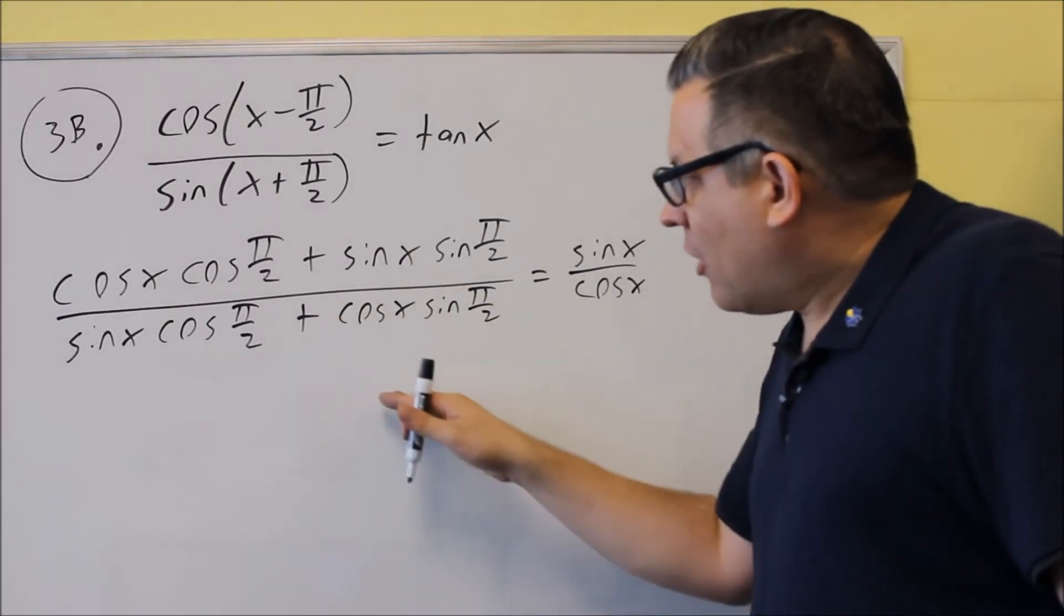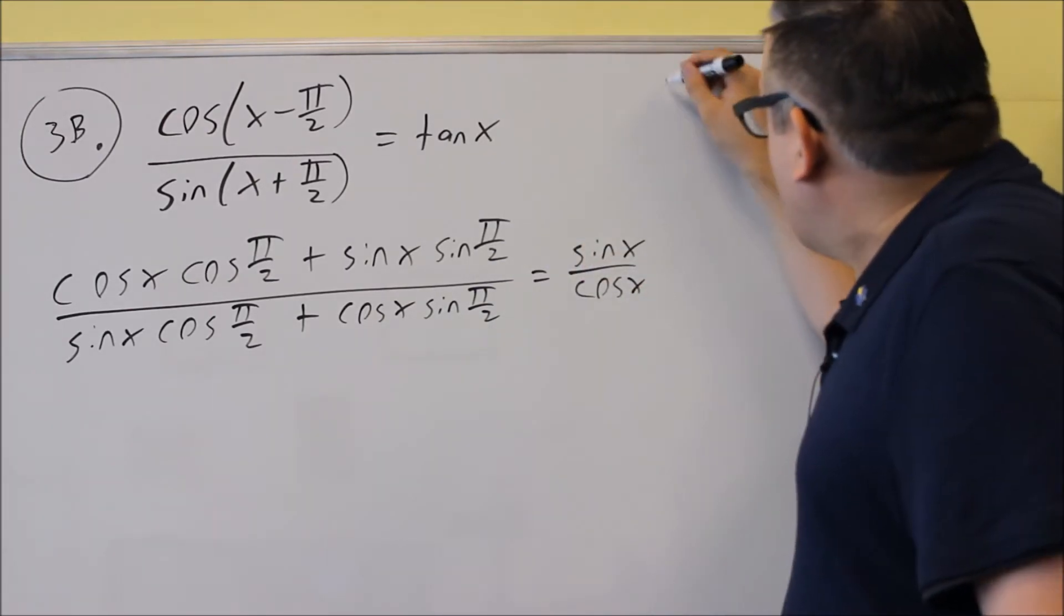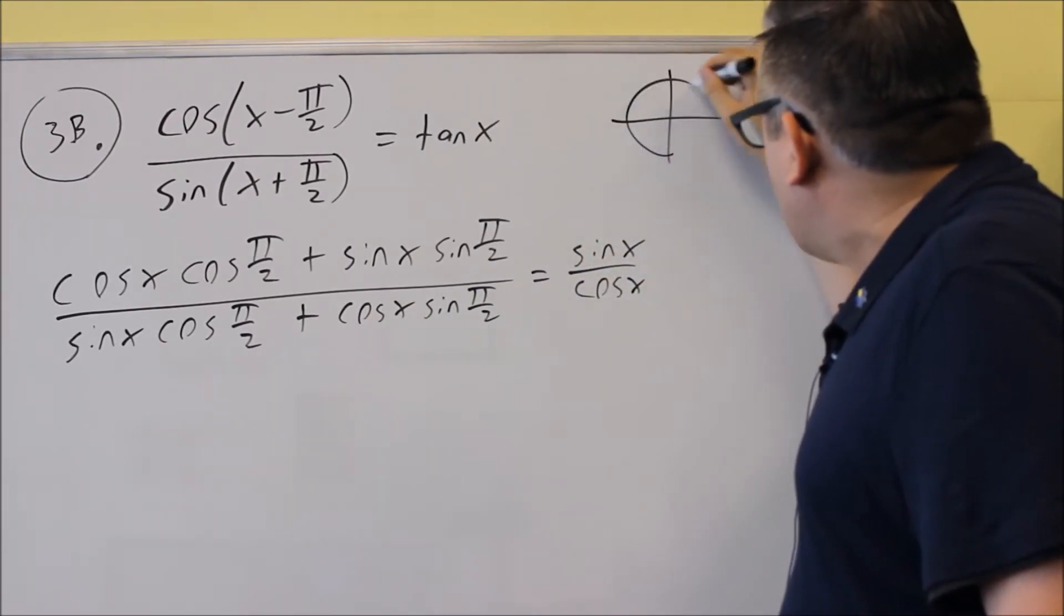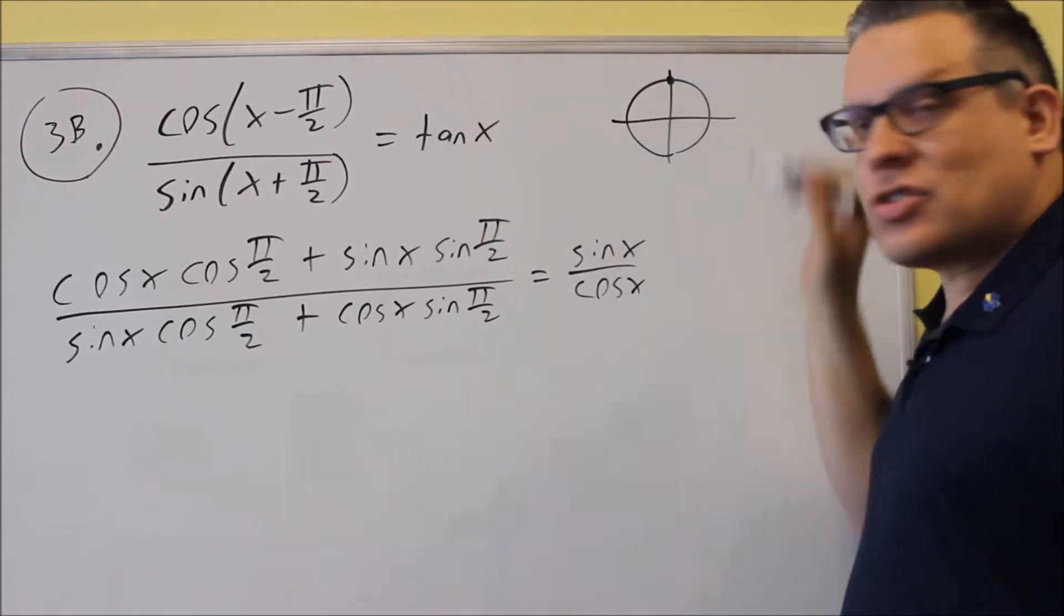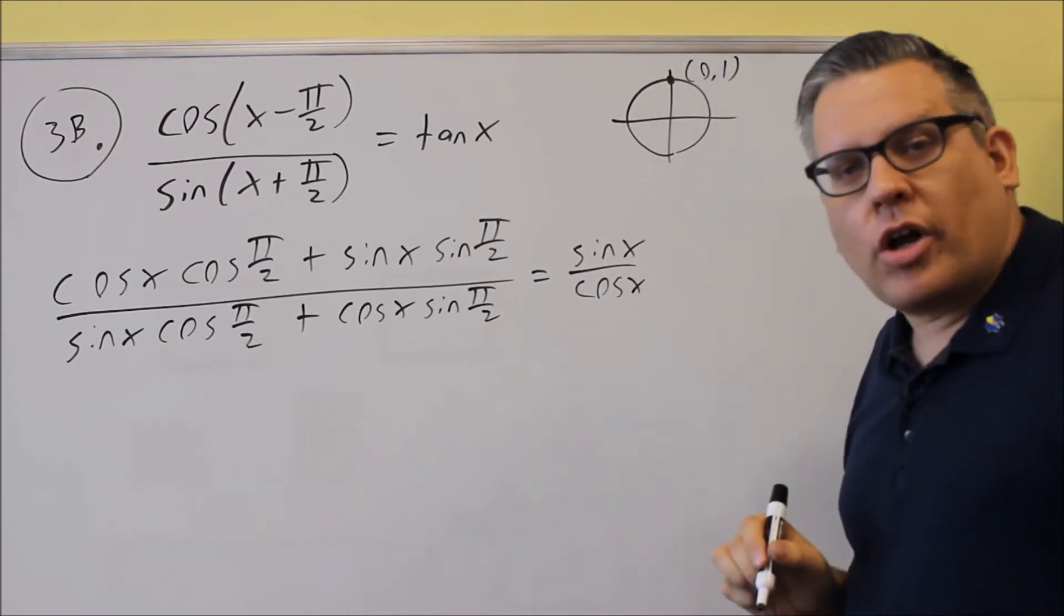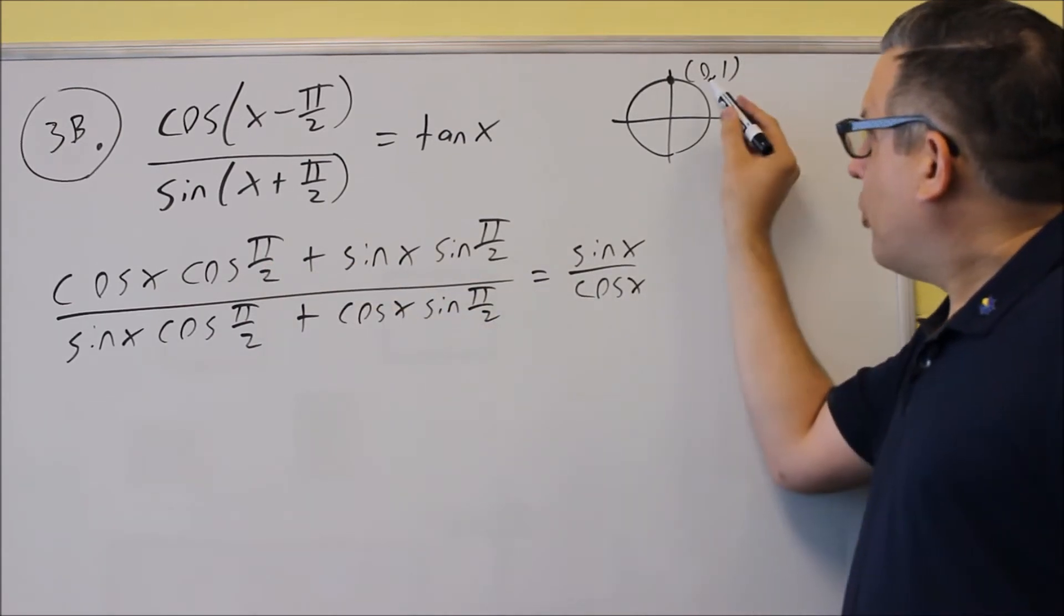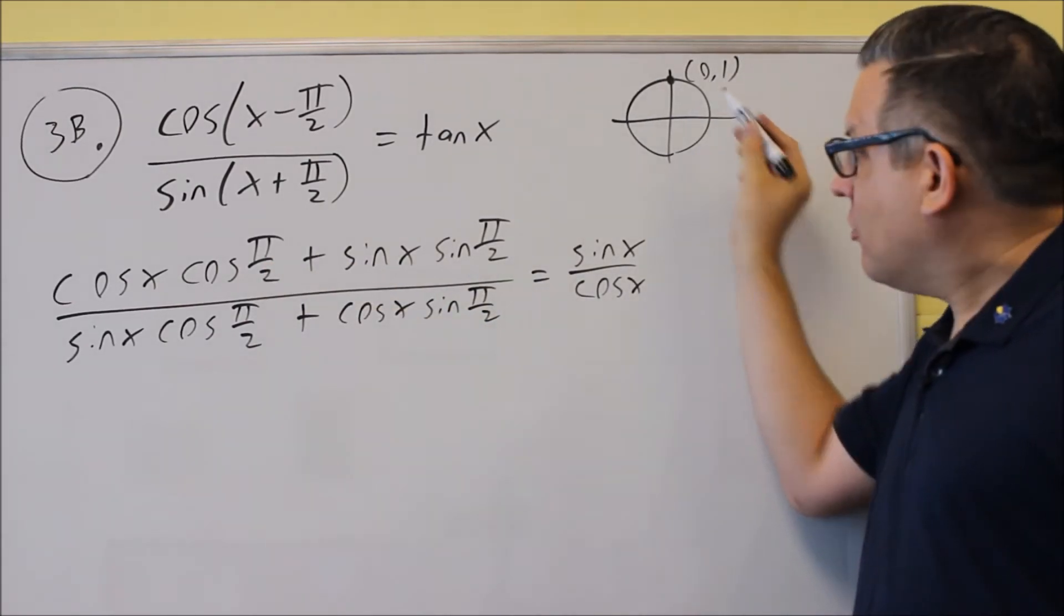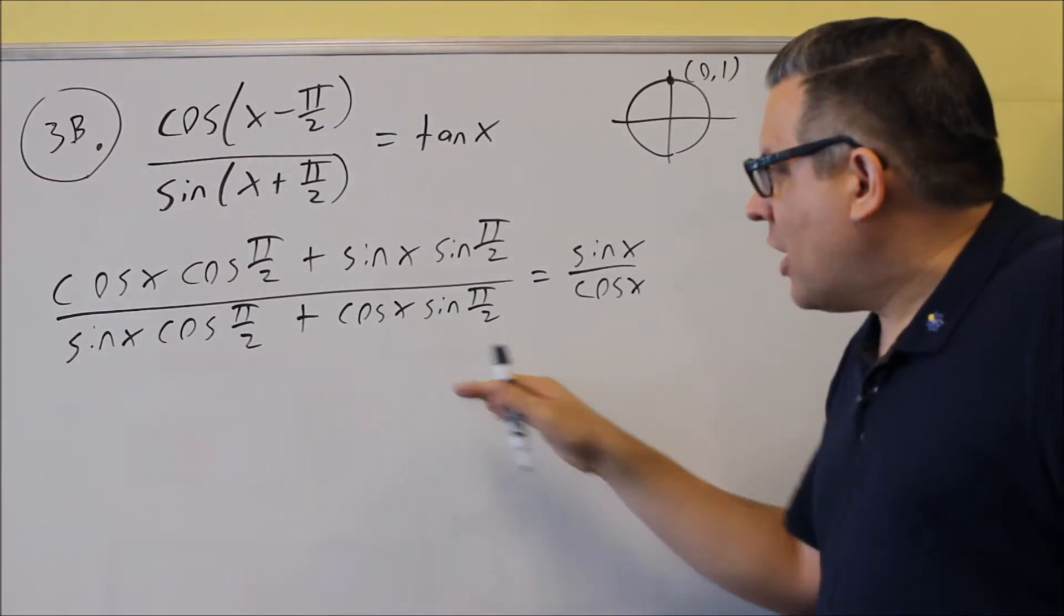Now we have pi over 2. We need to put in the values for that. We're going to look at a unit circle I'll draw here. Pi over 2 would be this point on the unit circle. The coordinates there are 0, 1. So everywhere I see cosine pi over 2, I'm going to put in a 0, because that's the x value. Sine pi over 2 will be a 1.